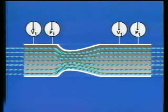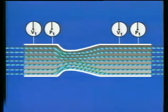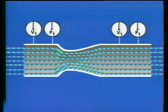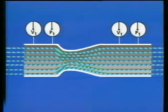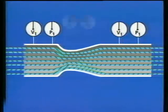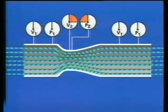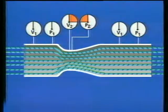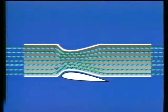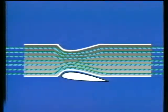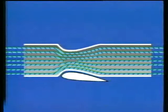If a constriction is placed in the middle of the tube, the same amount of air has to pass through a smaller area. This increases the velocity and decreases the pressure. If you were to replace the constriction with an airfoil, such as a wing, the same principle would still apply.